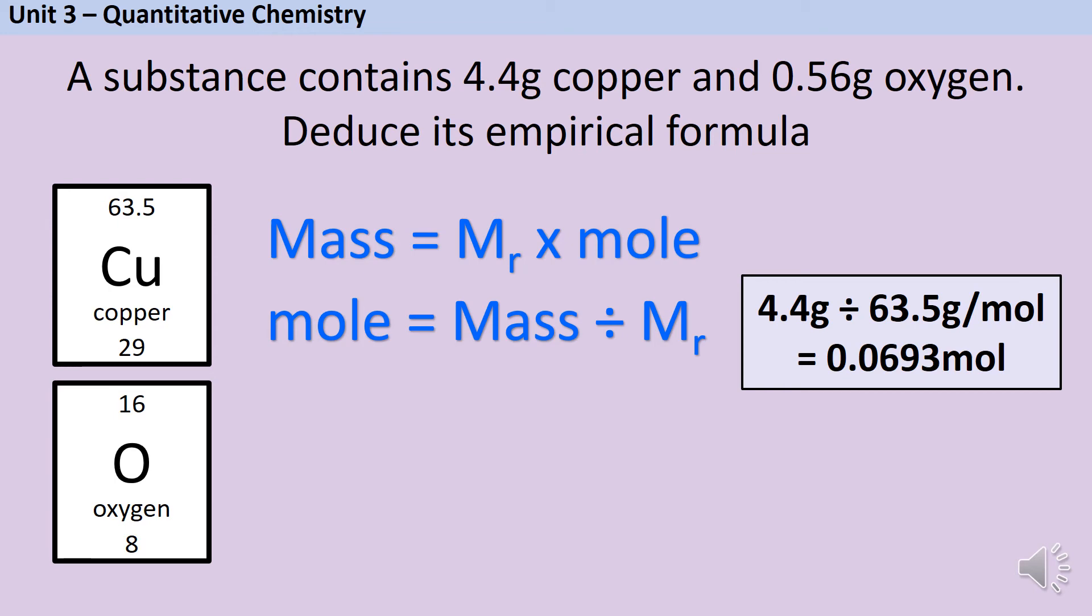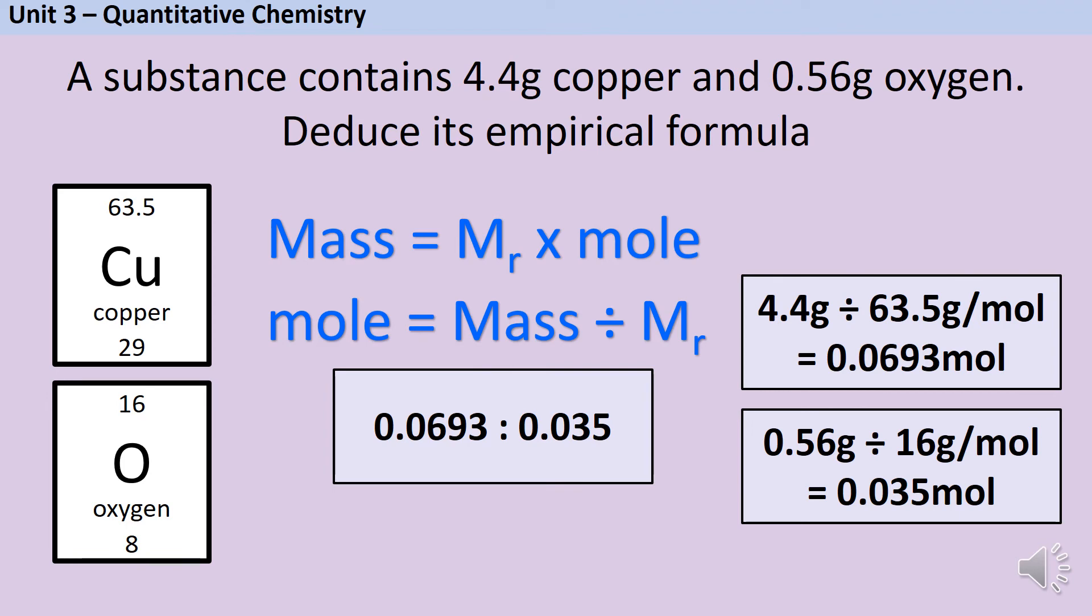Write down everything that your calculator display says, or if you have an answer button then use that, because as you round you're going to introduce uncertainty and there's a chance that you'll end up with an answer that even though you've done the correct method is not the answer on the mark scheme. So here I've got 0.0693 moles of copper and then I do 0.56 divided by 16 to get 0.035 moles of oxygen. I put those in a ratio: 0.0693 to 0.035.